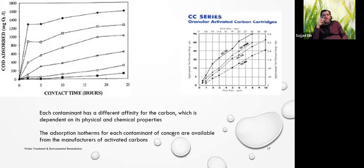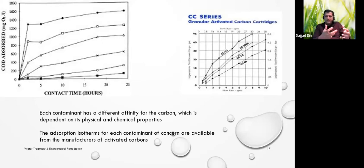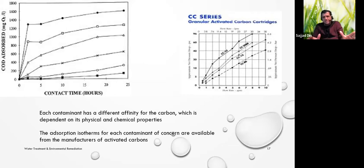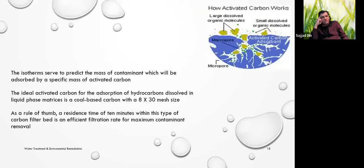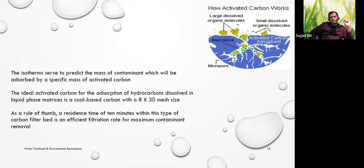Granular activated carbon is basically like roasted coconut shells — a very adsorptive material with many nooks and crannies and high porosity, so organic compounds love to stick to it. It looks like a little black powder. As water flows through it, it strips contaminants. The ideal activated carbon has a mesh size of about 8 by 30 inches, and the residence time you're looking for is about 10 minutes for maximum performance.